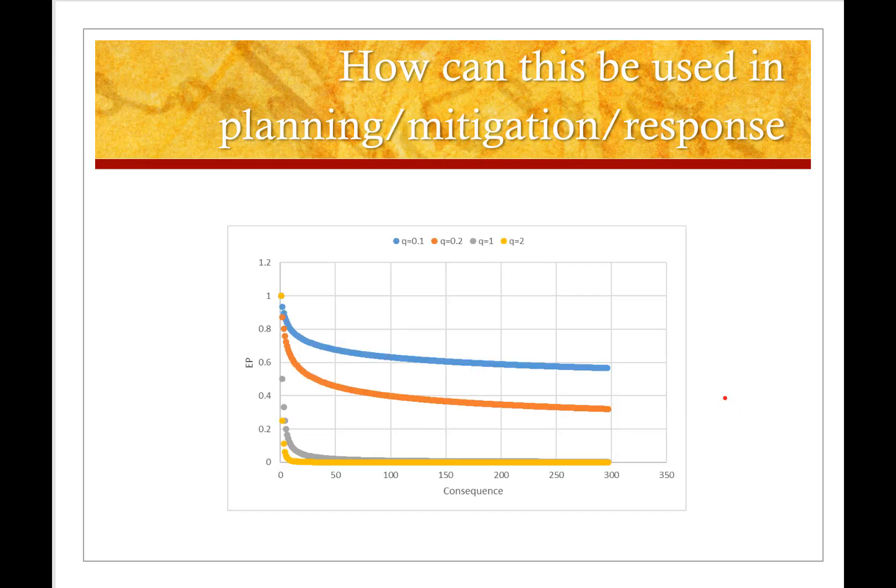Well all of these curves are power laws and this is an example of a set of curves of power laws where I have the exceedance probability plotted against the consequence and I haven't defined what that consequence is. It could be lots of things, it could be the cost of an event, it could be number of deaths, it could be magnitude of an earthquake, it could be many different things, but what we're always doing is plotting consequence along the x-axis and exceedance probability along the y-axis. It always starts at one and then it drops off as we move out in consequence.